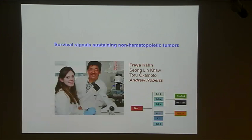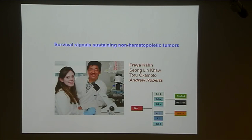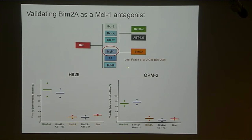BH3-only proteins such as BIM would take out the action of all the pro-survival proteins. If you engineer a form of BIM that harbors only the BH3 domain of BAD, it only takes out BCL2, BCL-XL, and BCL-W — just as ABT-737 does. An important tool was the variant called BIM2A, discovered and characterized by Erayner Lee and Doug Fairlie, which was a variation on wild-type BIM that was a biochemically and functionally selective antagonist of MCL1. That allowed us an additional tool to figure out in each tumour which pro-survival protein is most likely keeping them alive.